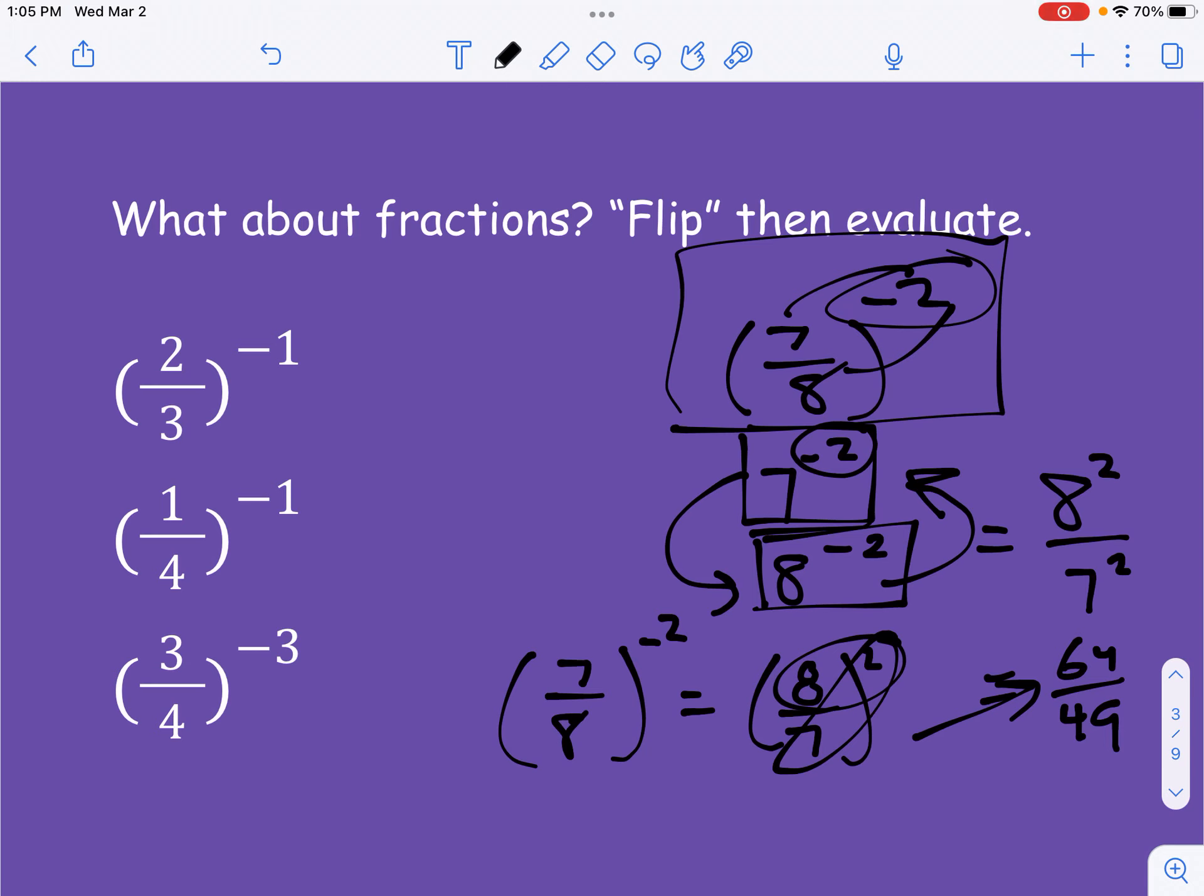So we have 2 3rds to the negative 1. So we're going to take this, and we're going to flip it. We're going to flip everything. So we're going to have 3 over 2 to the 1 power. And anything to the 1 power is just that thing, so you just would rewrite it as 3 over 2.